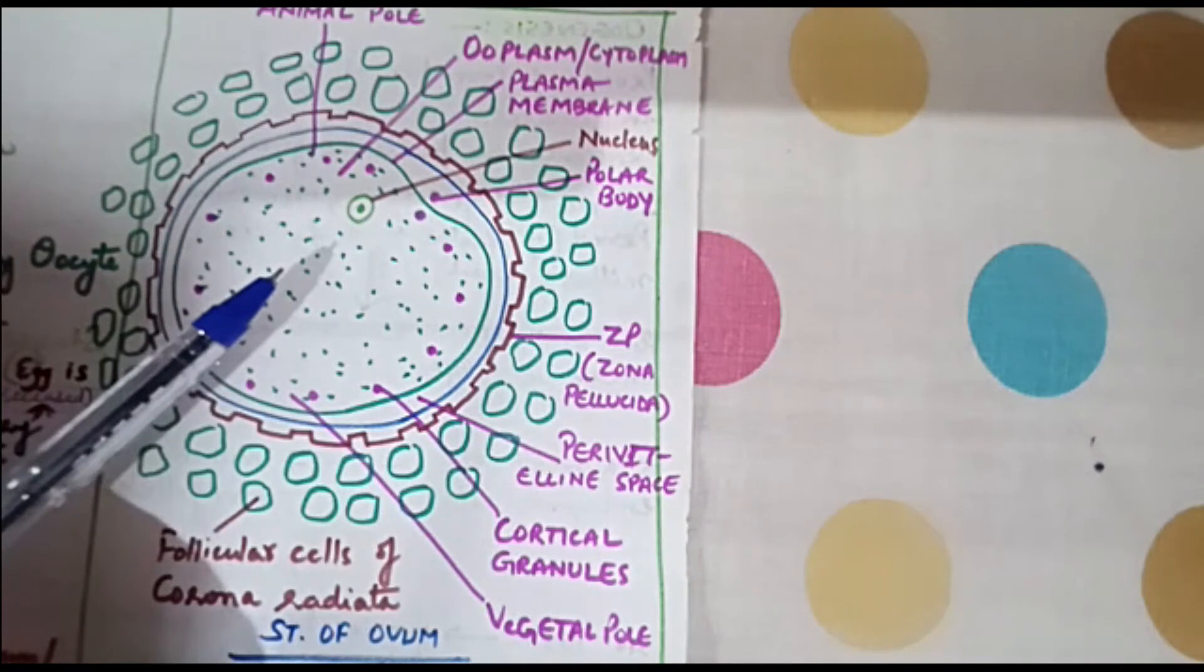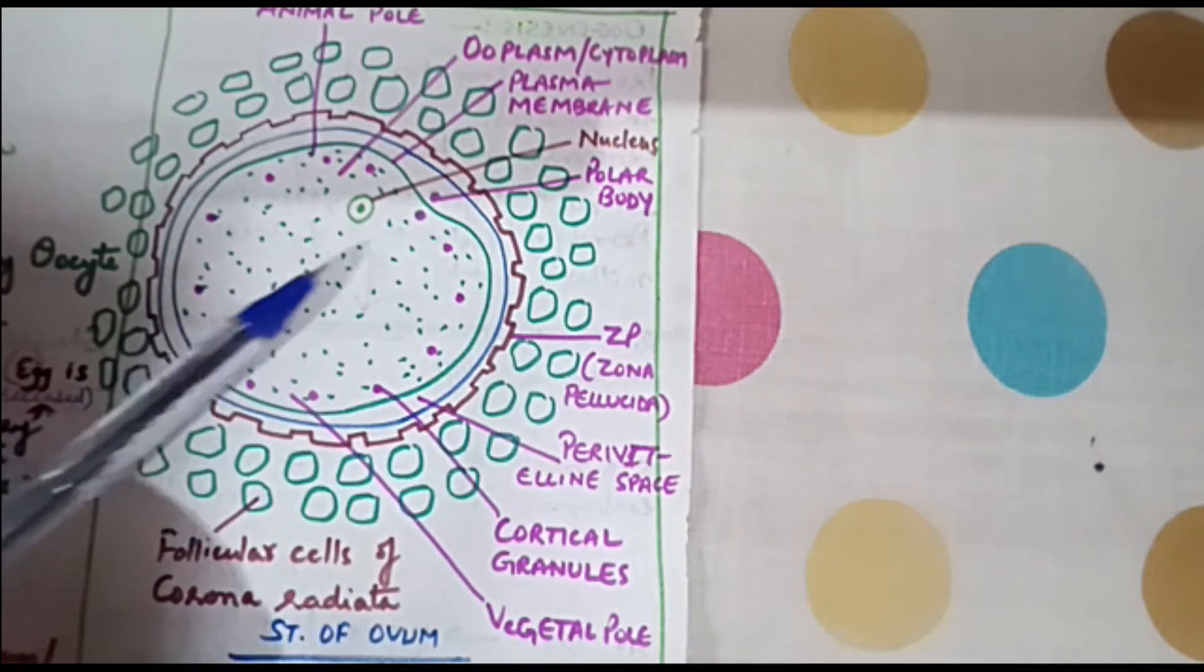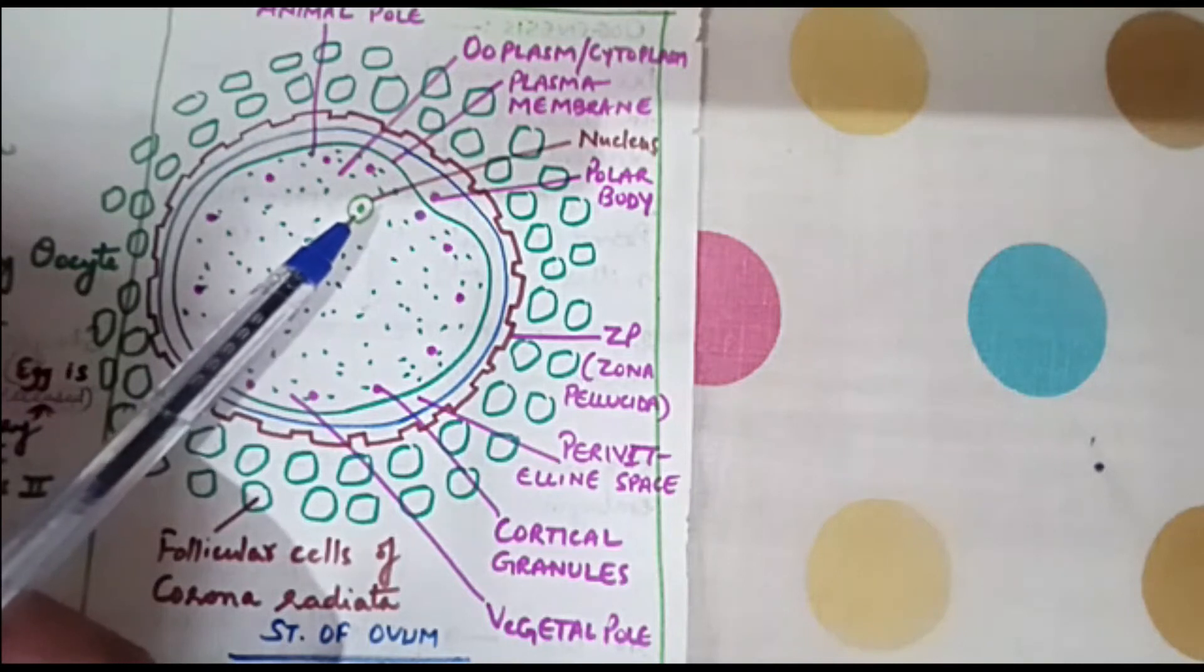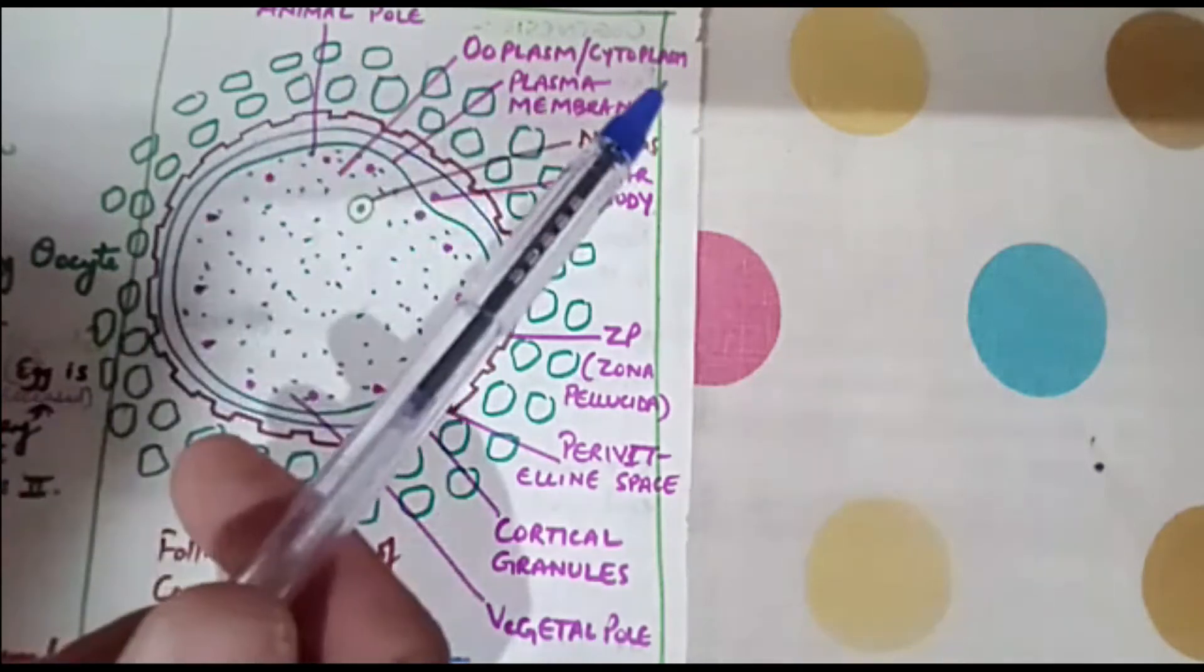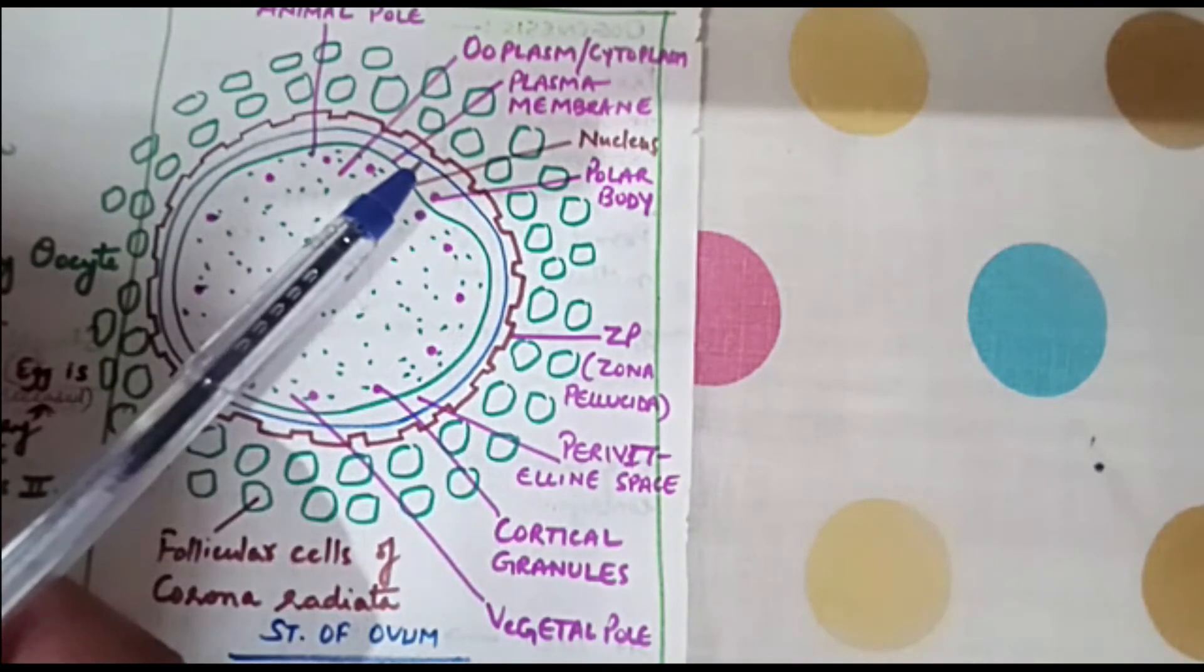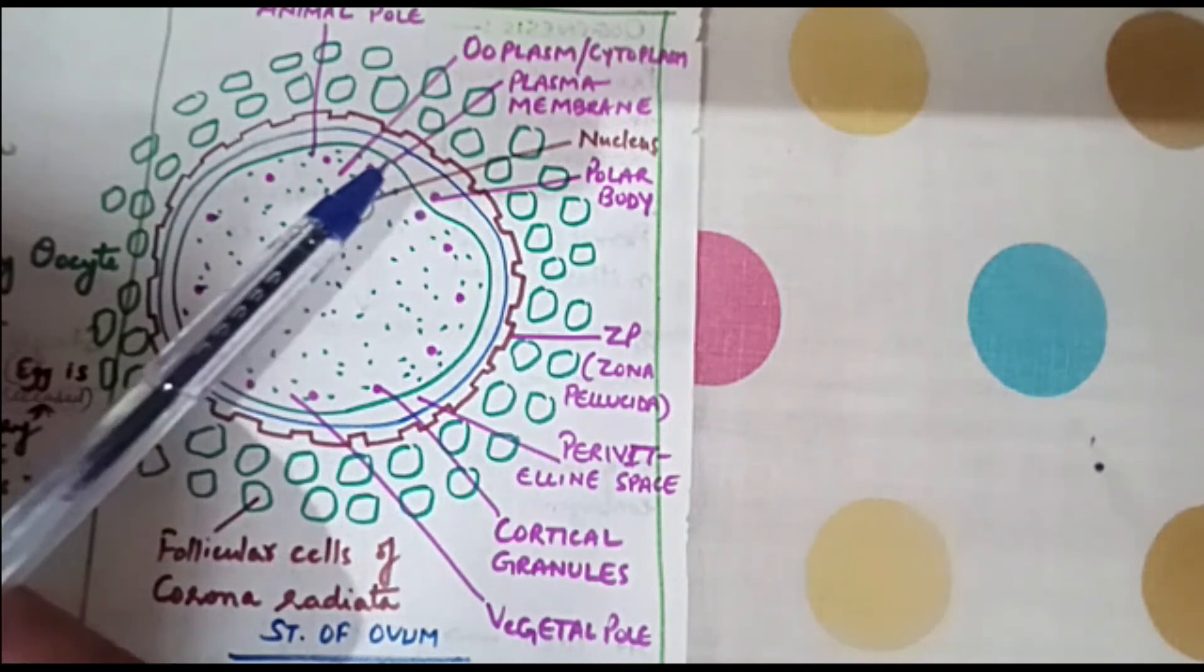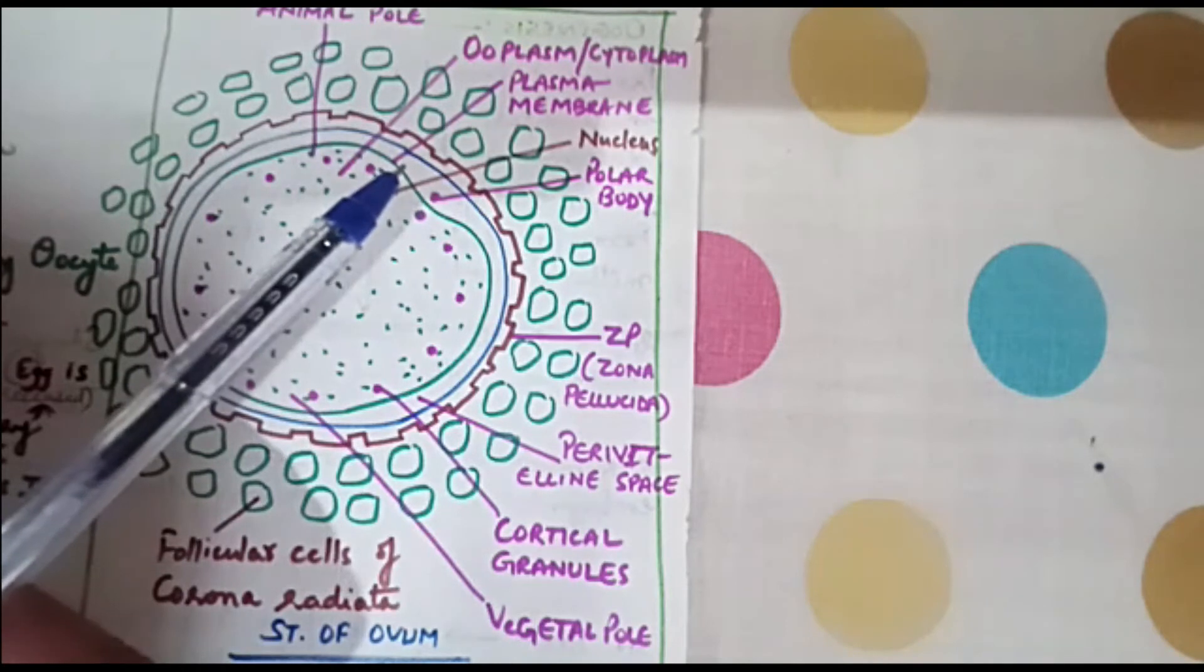Human ovum or egg is a unicellular structure having a nucleus in the center. The entire structure has cytoplasm which is known as ooplasm. There is a covering known as plasma membrane just outside the cytoplasm.